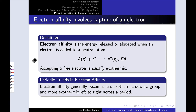Rather than ripping an electron out of an atom to form a cation, we can also think about giving an electron to an atom to make it an anion. The process of giving a neutral atom in the gas phase a free electron to form an anion A- is associated with an energy called the electron affinity — the energy absorbed or released when an electron is added to a neutral atom in the gas phase. The gained electron is listed on the reactant side, and the associated energy is abbreviated Ea. Interestingly, this is usually exothermic, and it's commonly listed as a positive value even though it is an exothermic process.